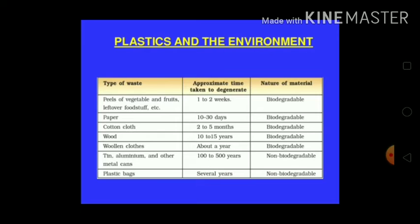That is why we are advised to boycott the use of plastic as much as possible. Biodegradable materials include vegetables, fruits, and leftover food stuff, which decompose in 1-2 weeks. Paper takes 10-30 days to decompose. Cotton cloth takes 2-5 months to degrade. Wood takes 10-15 years to degrade. Woolen cloth takes about 1 year to degrade. All of these are biodegradable materials.